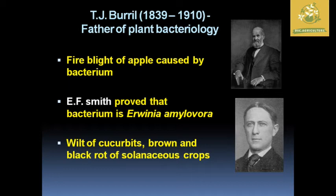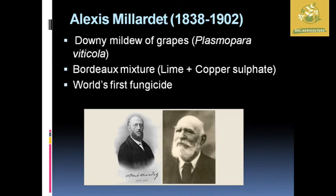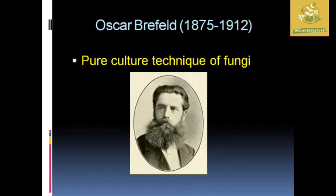Burrill described fire blight of apple caused by a bacterium. Erwin F. Smith proved that the bacterium is Erwinia amylovora. Smith also described wilt of cucurbits, brown and black rot of solanaceous crops, and the organism causing club root of cabbage — Plasmodiophora brassicae — as well as wart disease of potato caused by Synchytrium endobioticum. Alexis Millardet studied downy mildew of grapes caused by Plasmopara viticola and introduced the world's first fungicide — Bordeaux mixture (lime plus copper sulfate).